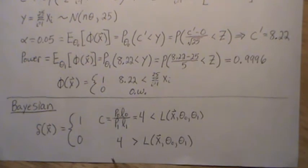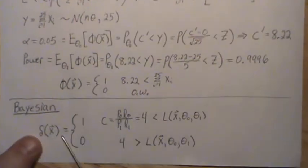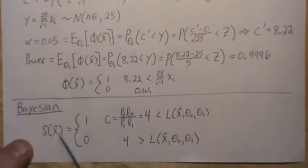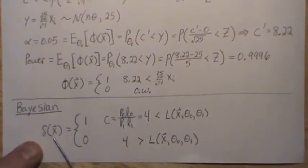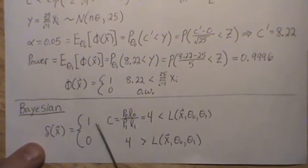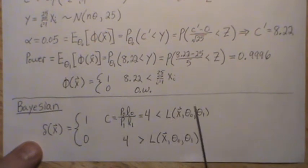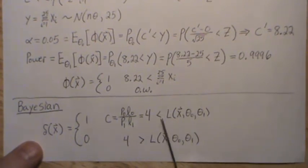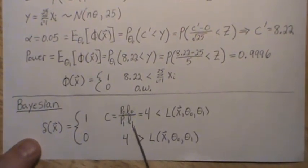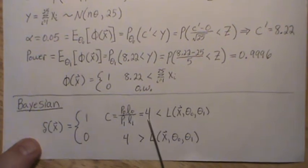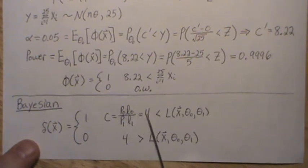Now let's do the Bayesian test. The decision function is the Bayesian equivalent of the test function — it's 1 if the likelihood ratio, sometimes called the Bayes factor, is greater than some constant C. That C is determined by P0, L0, P1, and L1, and equals 4. That's our critical value.